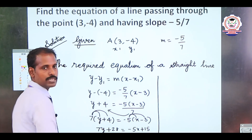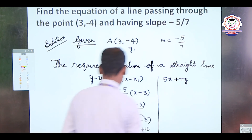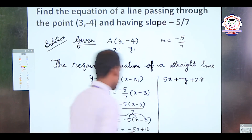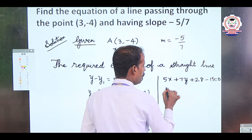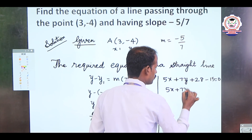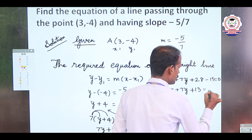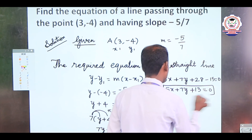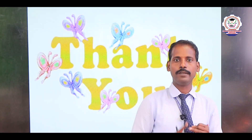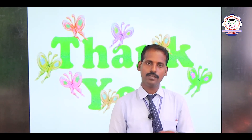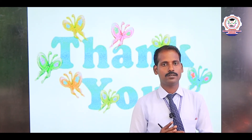Simplifying, 28 minus 15 equals 13, so the required equation of the straight line is 5x + 7y + 13 = 0. Now we have learned how to find the equation of a straight line when one point and one slope are given. Go through it, and if you have any doubts, watch the video again. Thank you.